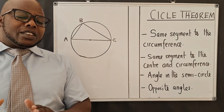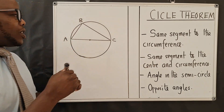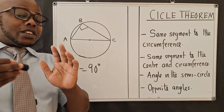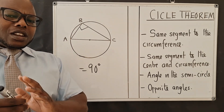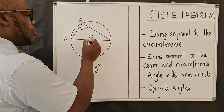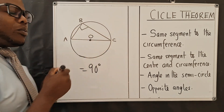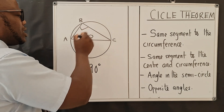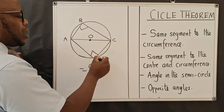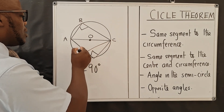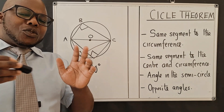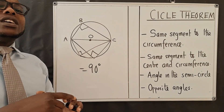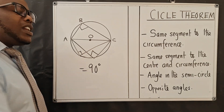Property number 3 says that when you've got a triangle inside the semicircle, the angle at the point touching the circumference is 90 degrees — you don't need to calculate. The angle at B will always be 90 degrees. If you've got a diameter and a triangle formed inside the semicircle, at whichever point that triangle touches the circumference, it will be 90 degrees. Just check: is that line passing through the center? Yes. Is it touching the circumference? Yes. Then it's 90 degrees.